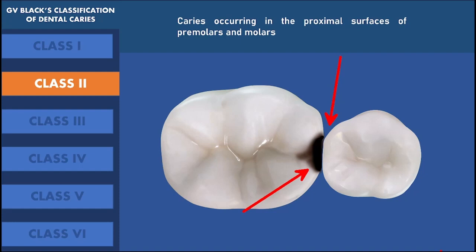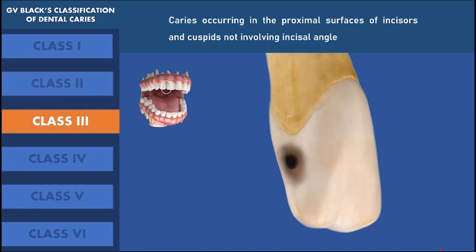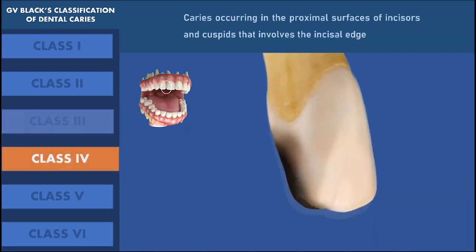The interdental probe or a dental explorer can be used for efficient diagnosis of class 2 dental caries. Class 3 dental caries is the caries which occurs in the proximal surface of incisors and cuspids which do not include the incisal angle. We can see that class 3 dental caries occurs in the proximal surface of the anterior teeth but does not include the incisal angle. Class 4 dental caries is the caries which occurs in the proximal surface of the anterior teeth — the incisors and the canines — that do involve the incisal edge.